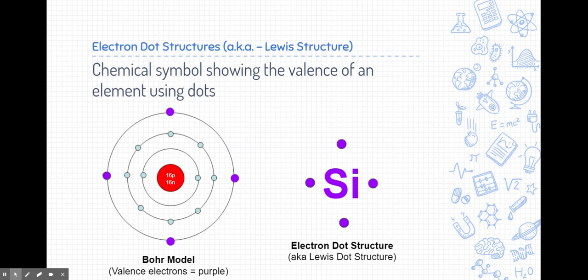If you look at the Bohr model, they're the electrons that are in purple. So what we do to really emphasize just those electrons is we simplify our model, and we just write the symbol. This is silicon, and we put four dots around it.